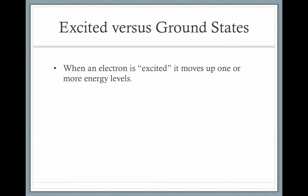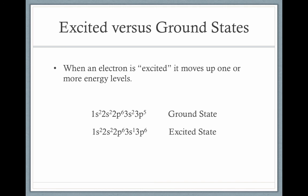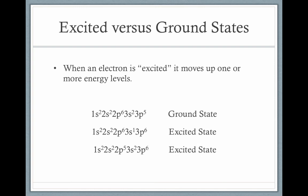That brings us to our last point: excited versus ground states. When an electron is excited, it moves up one or more energy levels. Here's a ground state electron configuration — test yourself to see which element it belongs to. If we excite an electron, it moves from a lower energy level to a higher one. For example, an electron moves from the 3s sublevel to the 3p sublevel. We know it's in an excited state because there is an unfilled orbital below the highest filled orbital. There are many possible excited states — here's another where an electron jumps from the 2p sublevel to the 3p sublevel.